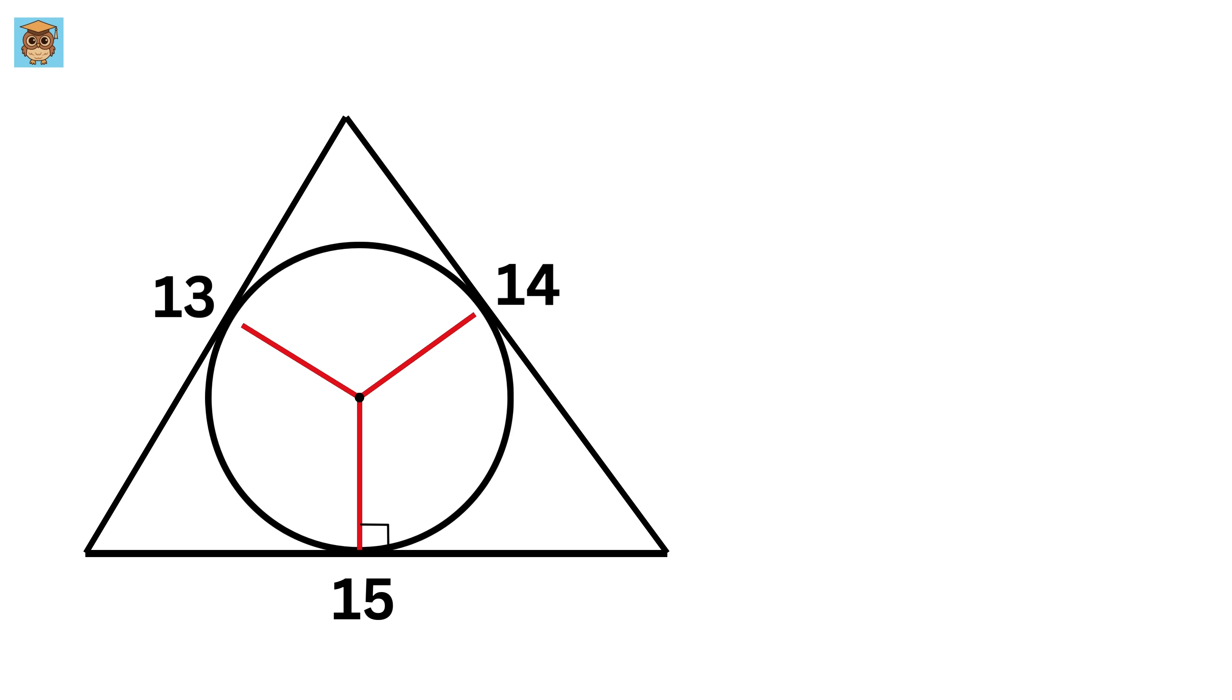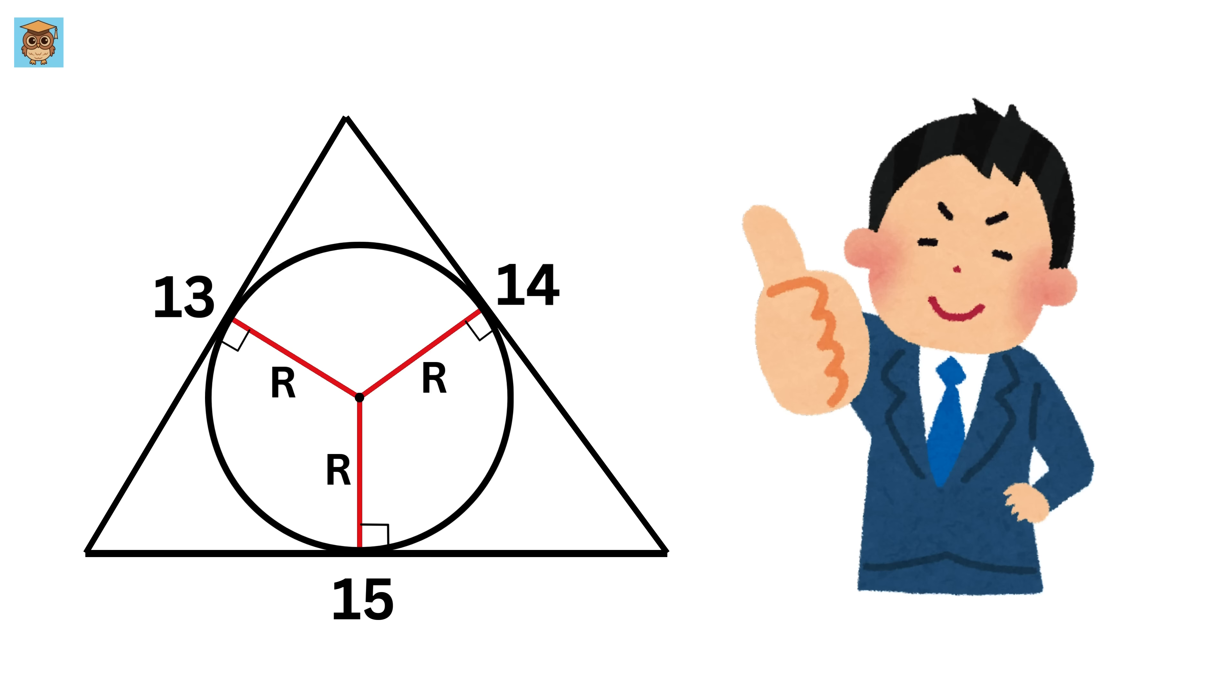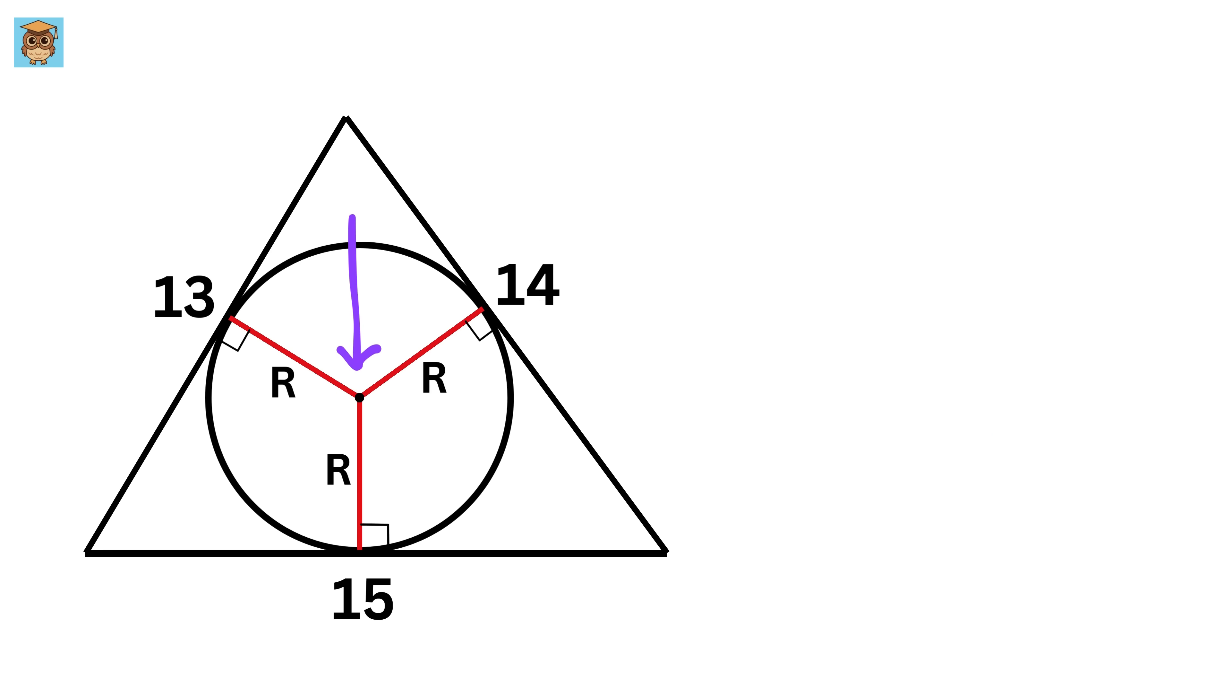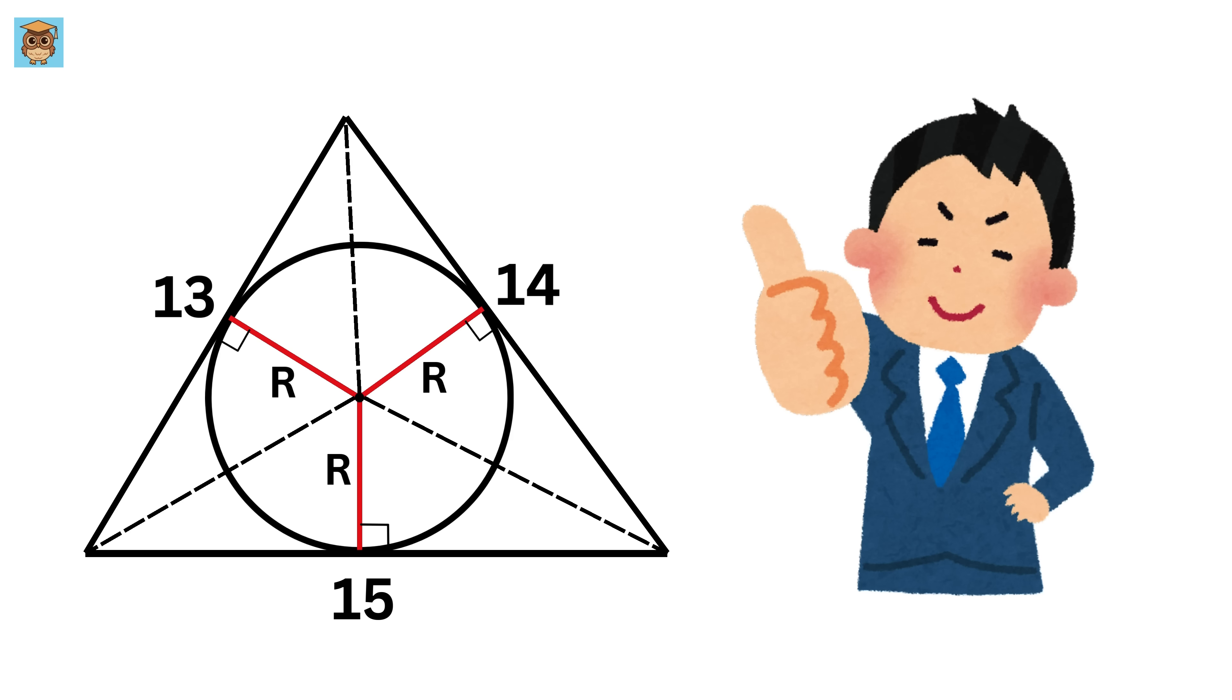Similarly, let us also draw these two radii and these two angles will be 90 degrees. Let us label these radii as R. Now we will connect the center of this circle with the vertices of this triangle. So, construct this line, then this line, and then this line. Great!